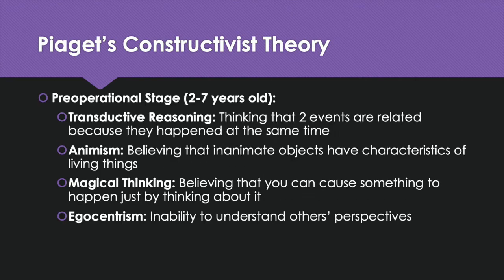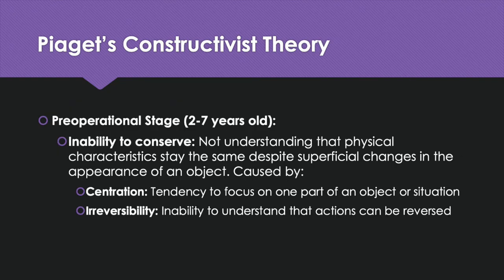The pre-operational stage, from age two to seven, is characterized by transductive reasoning — when children think two events are related just because they happen at the same time. It also features animism and magical thinking. Animism is believing that inanimate objects have characteristics of living things. Magical thinking is believing you can cause something just by thinking about it — for example, if a child thinks about his mom getting hurt and then she does, he might think he caused it. Children in this stage are also egocentric, meaning they can't understand other people's perspectives and think everyone has the same information and sees the world the same way they do.